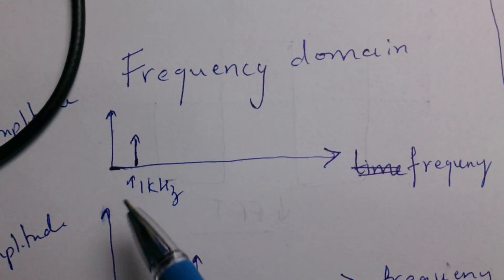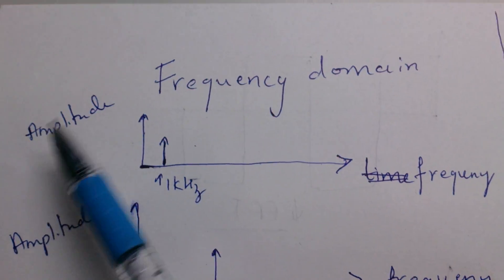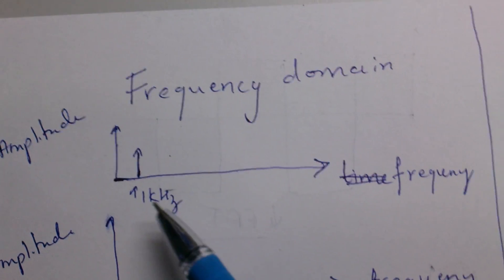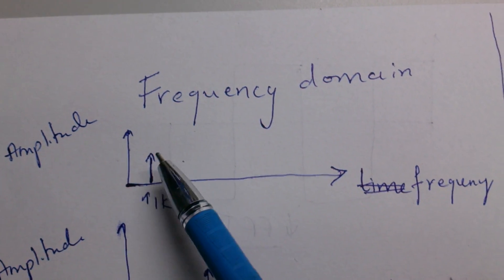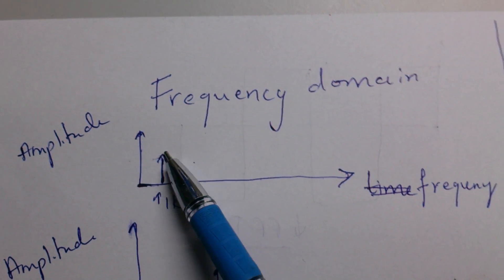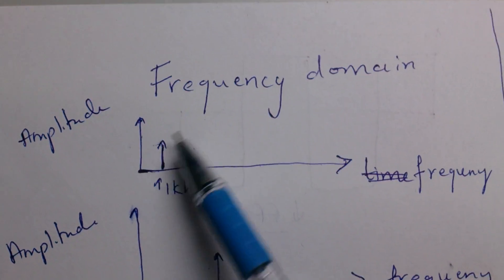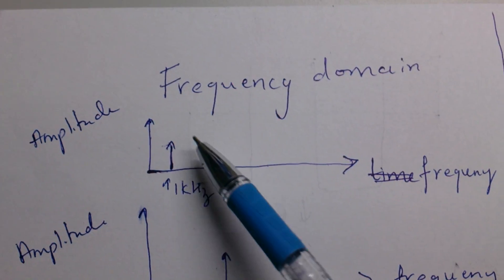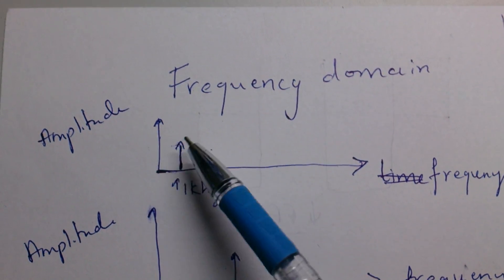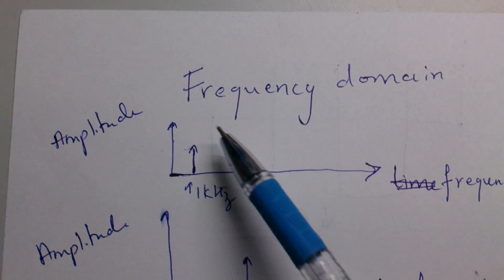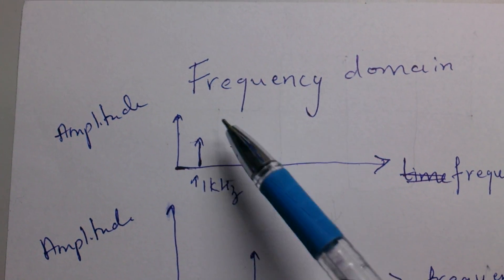This is the frequency domain, you have amplitude here on y-axis and at 1 kilohertz you get a peak. The value of this peak you can obtain by taking Fourier transform. I won't go in depth of Fourier transforms because before going to Fourier transform you have to learn what do you mean by frequency domain.